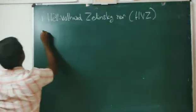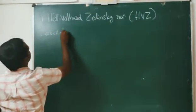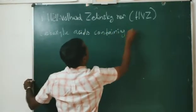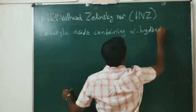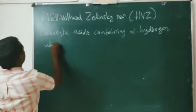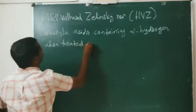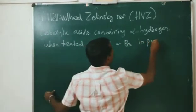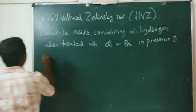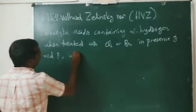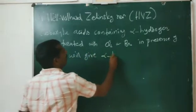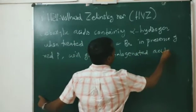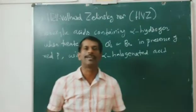So, carboxylic acids containing alpha hydrogen, when treated with chlorine or bromine in the presence of red phosphorus, will give alpha-halogenated acid. This reaction is known as the Hell-Volhard-Zelinsky reaction.